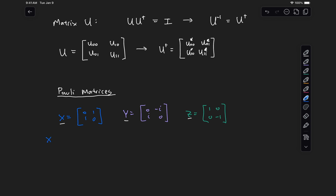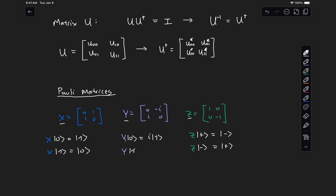The X gate takes state 0 to state 1 and state 1 to state 0. The Z gate does something similar but with the plus and minus states — it takes state plus to state minus, like a 180 degree rotation about the Z axis, and state minus to state plus. The Y matrix is a rotation about the Y axis, so if we take state 0, it will take us to state 1, but it adds a global phase of i.